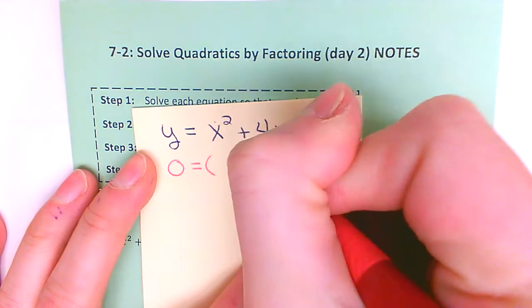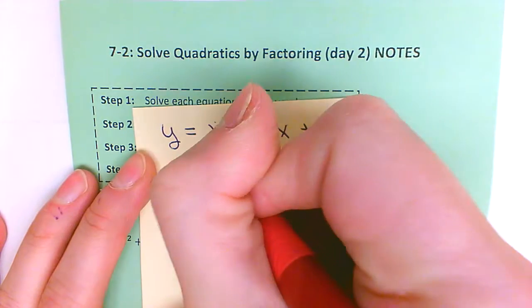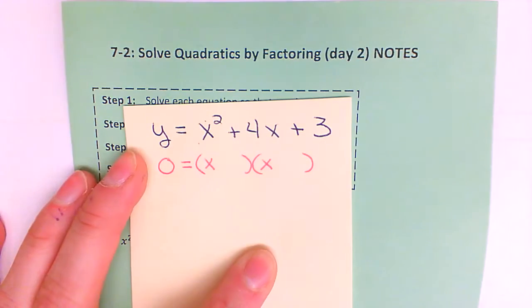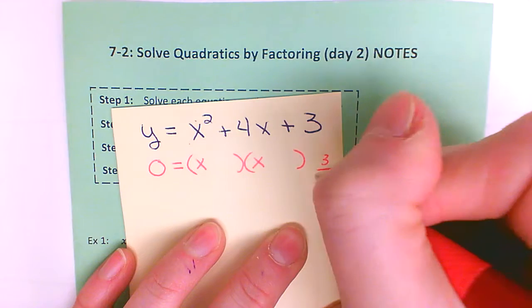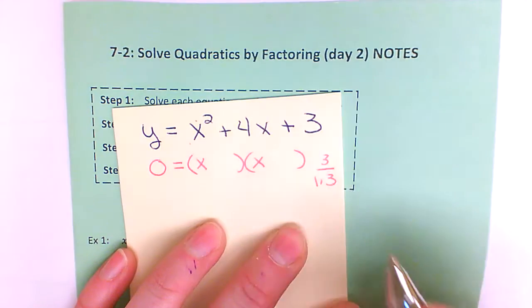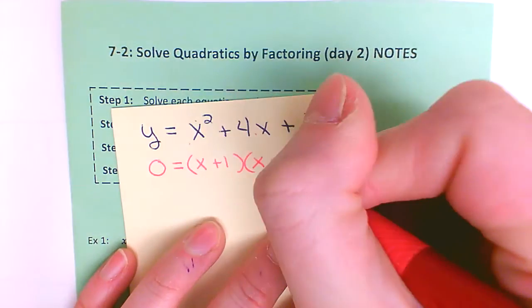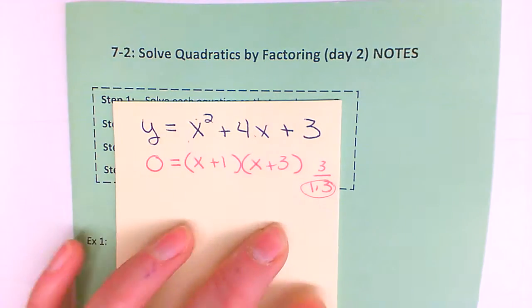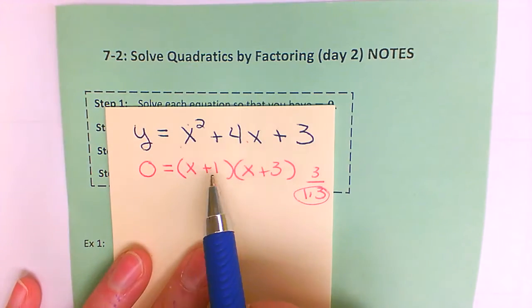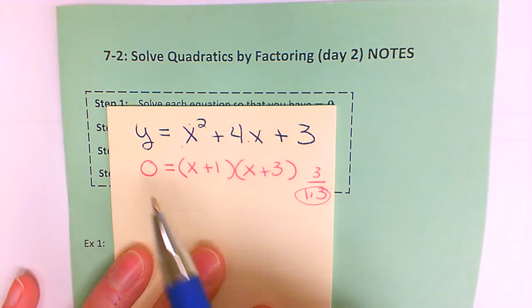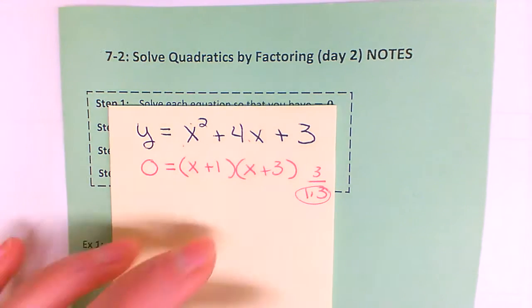I'm going to factor the trinomial. Whenever you do not have a number in front of the x squared, you can just put your parentheses with the x's right there. List the numbers that multiply to give you three — one times three. Those two do add to give me four, so that becomes a plus one and a plus three. Once you have that factored, if you have two things multiplied together and your answer is zero, then either one or both of them could equal zero.